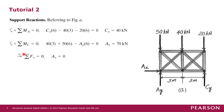Next, we sum total forces in the horizontal direction equal to zero. There is only one horizontal force, Ax, and since there are no other horizontal forces, Ax = 0.